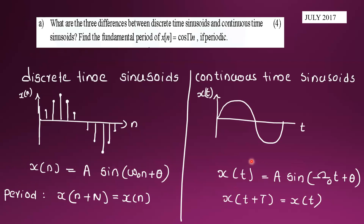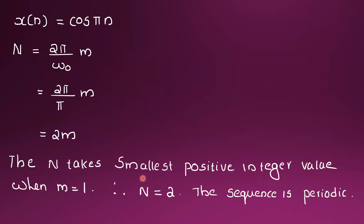For x(n) = A·sin(ω₀n + c), if we require ω₀·N = 2π·m, then N = 2πm / ω₀. For this to yield an integer N, the ratio 2πm / ω₀ must be an integer value m, where m is a positive integer.